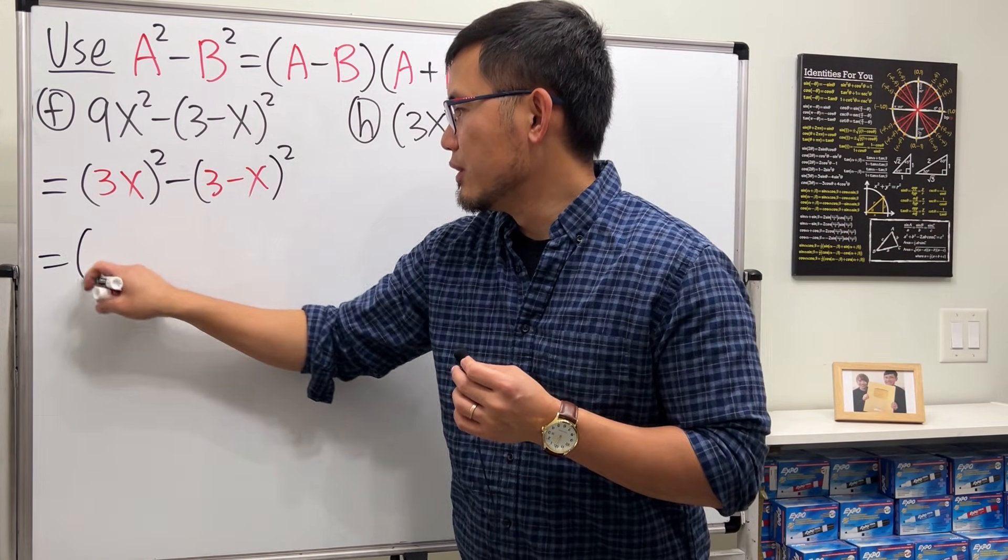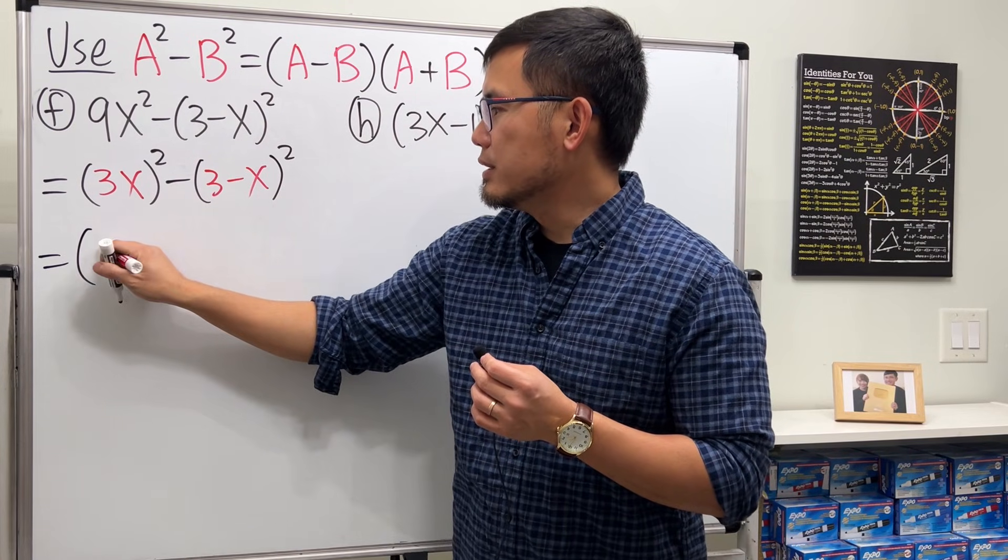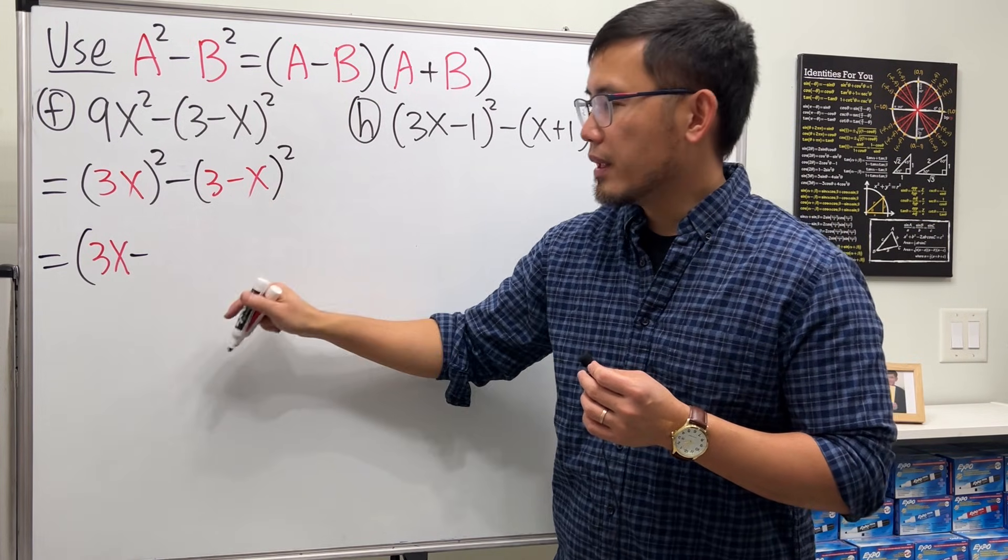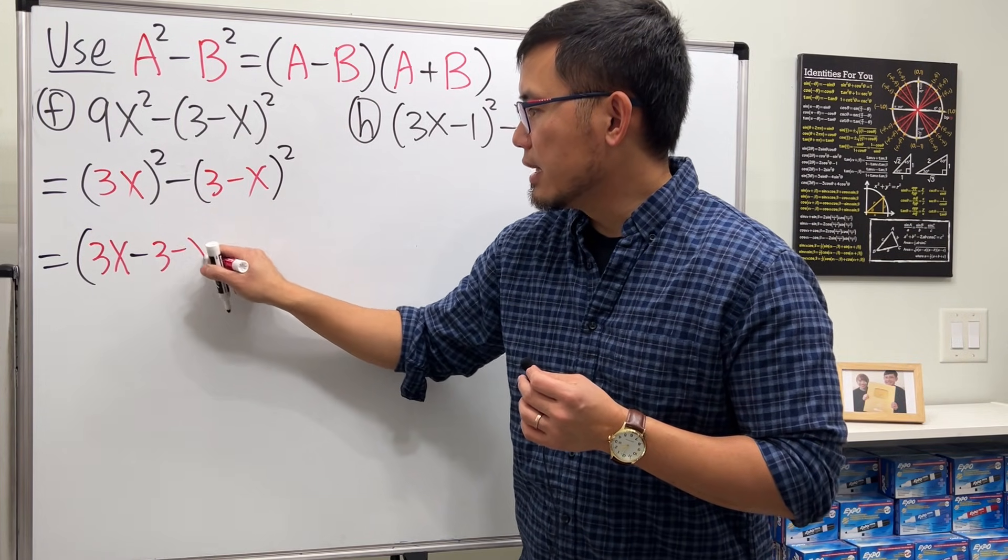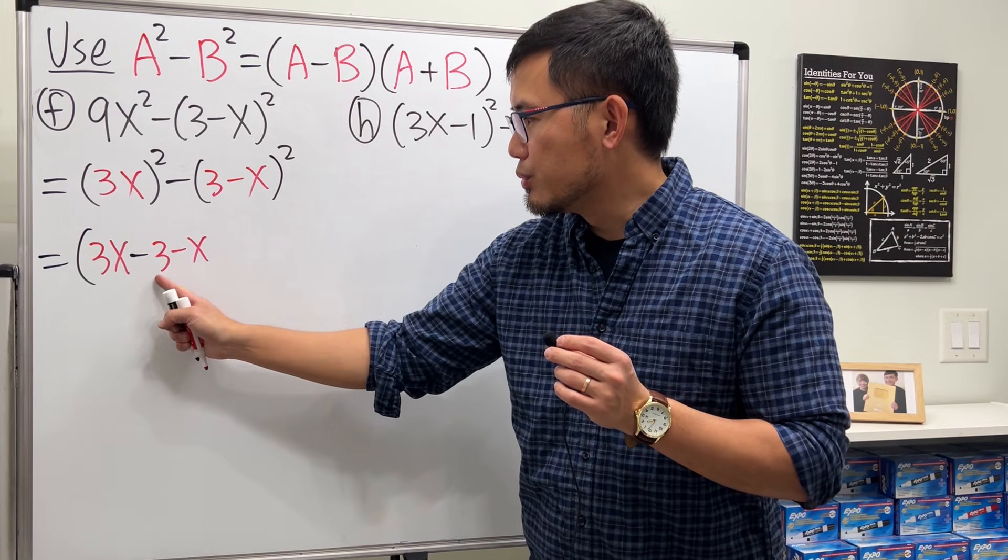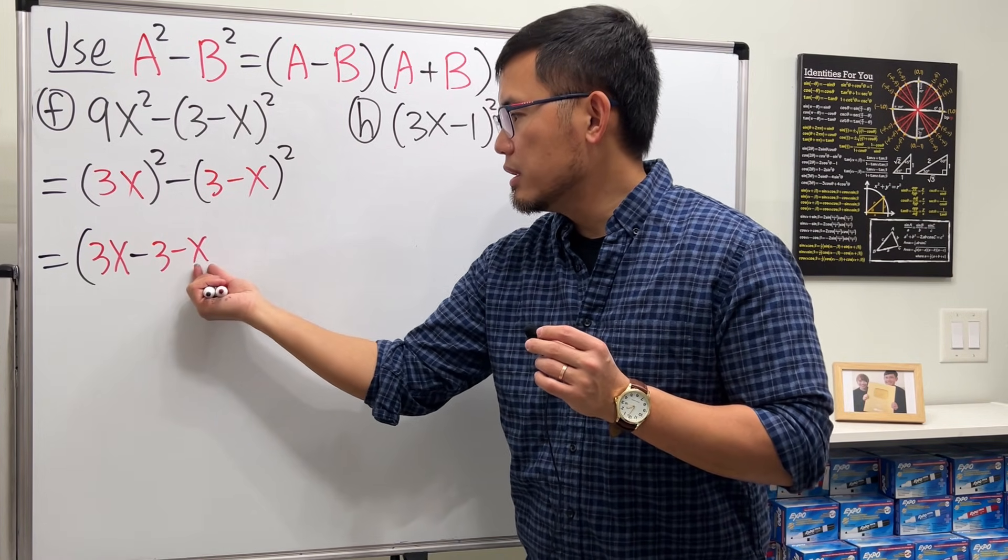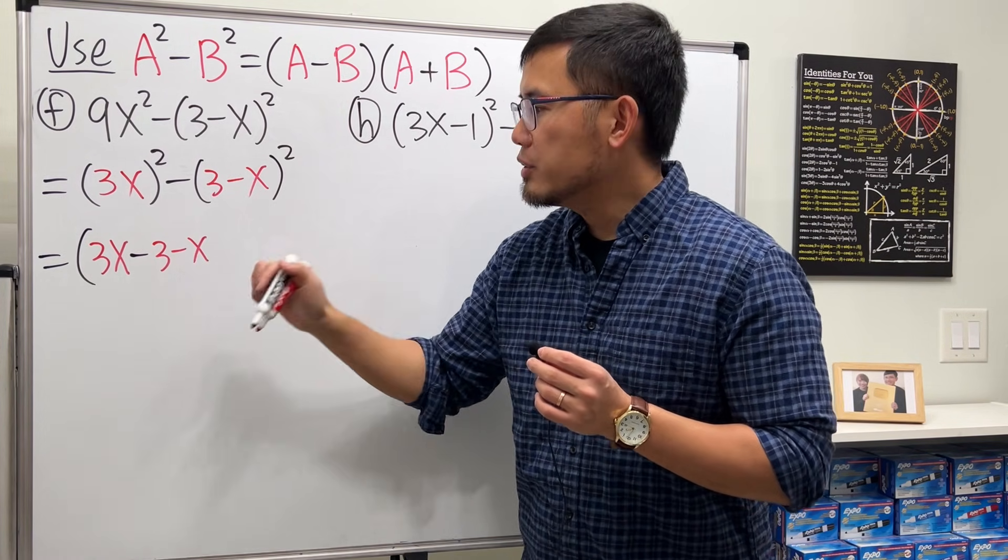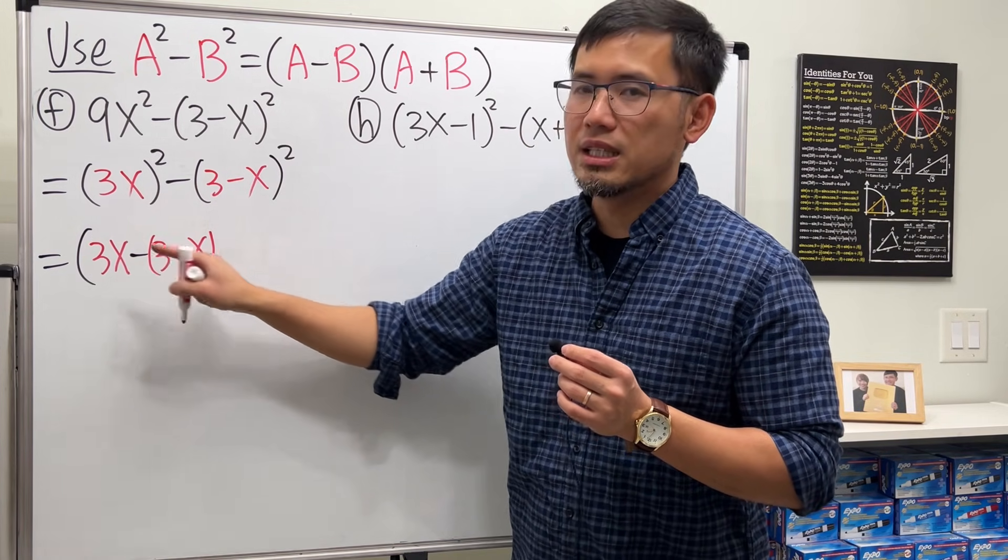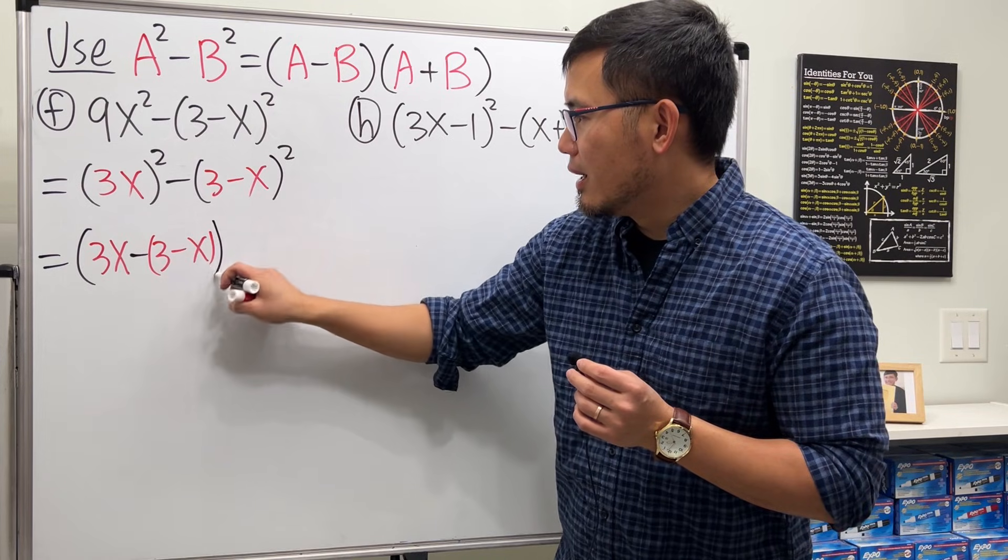The formula says go ahead and put down the first, which is 3x, and then minus the second, which is this 3 minus x. But be careful because this right here has two terms. The first term is 3, the second term is x. Make sure you put down a parentheses because you will have to distribute this negative right here.